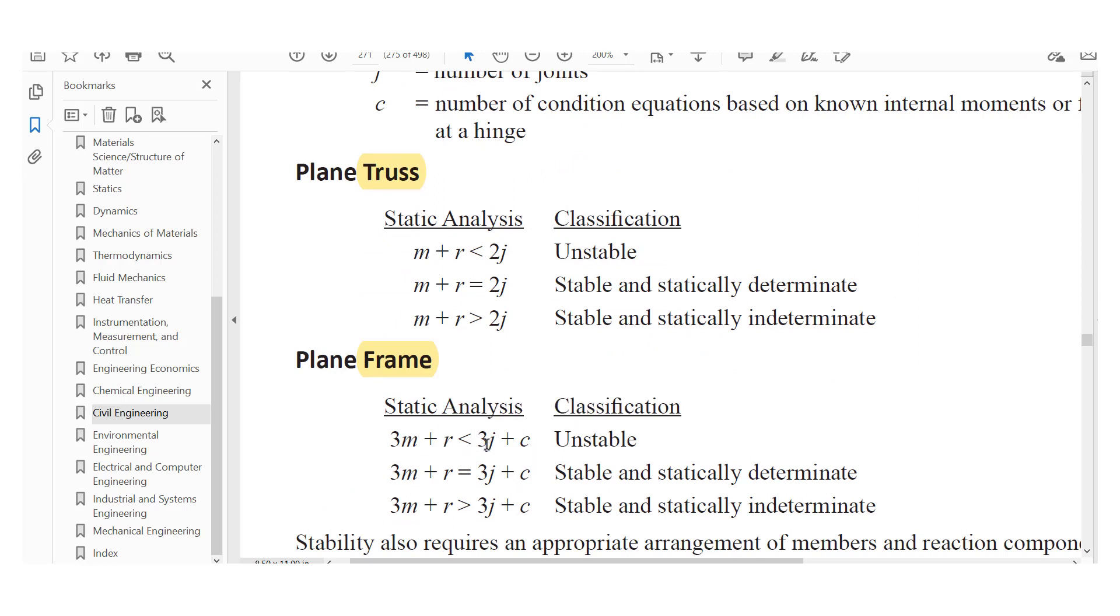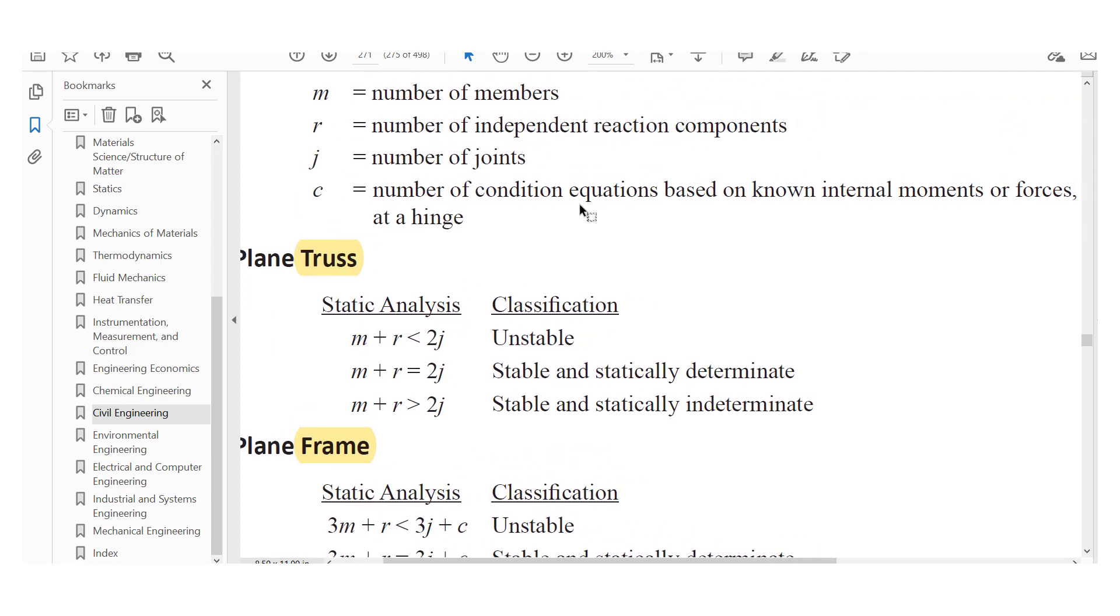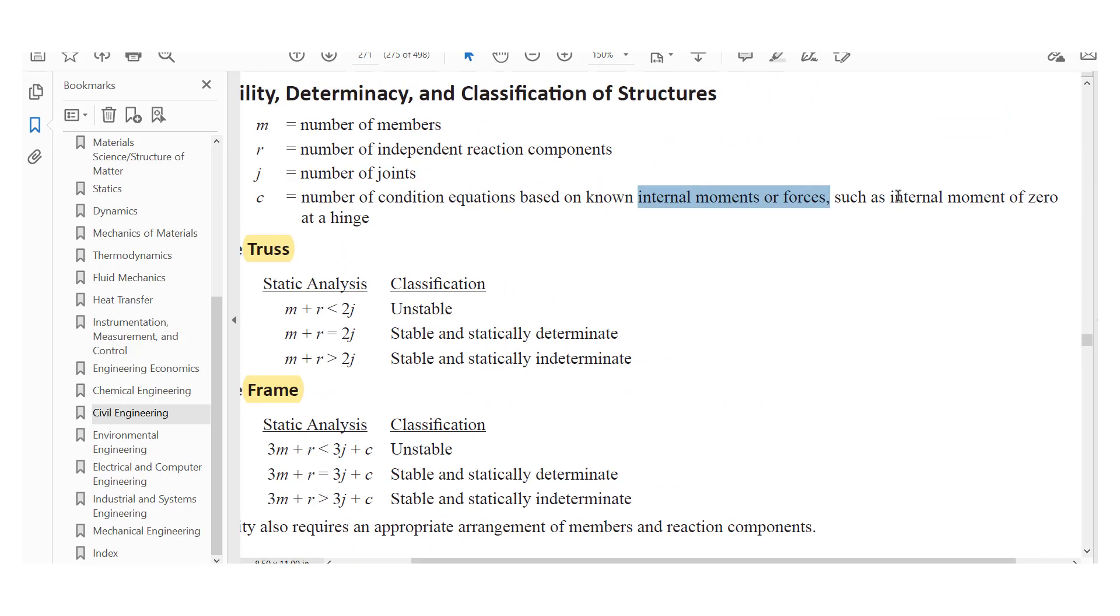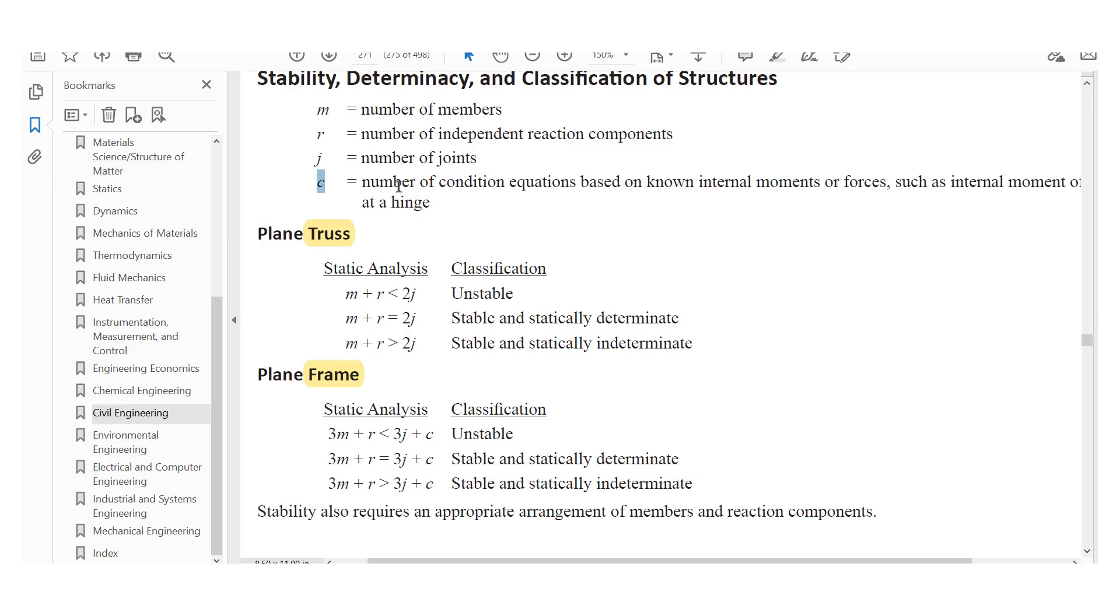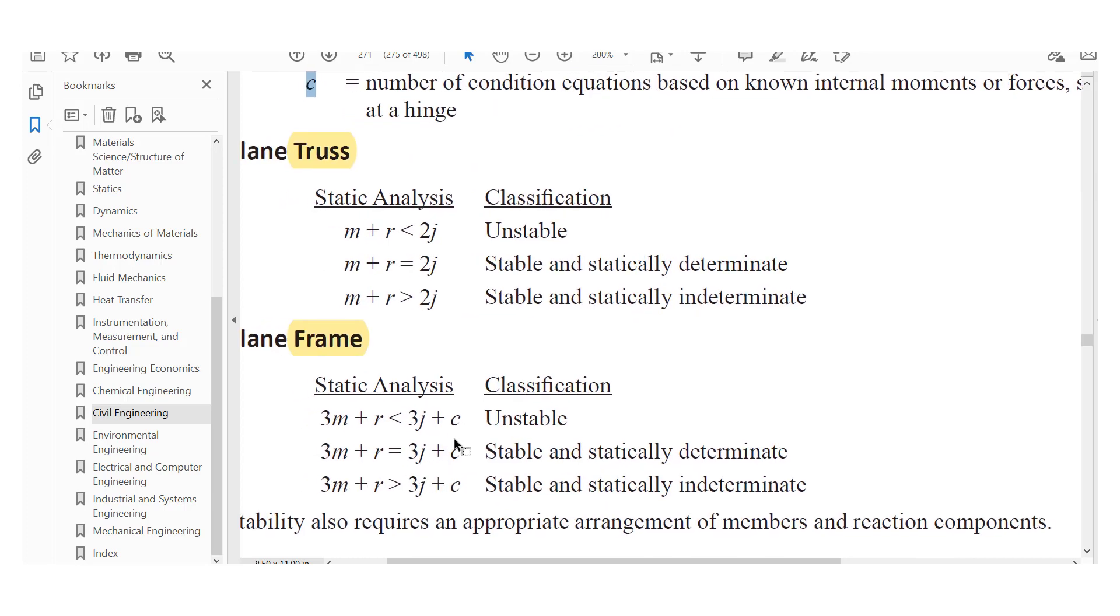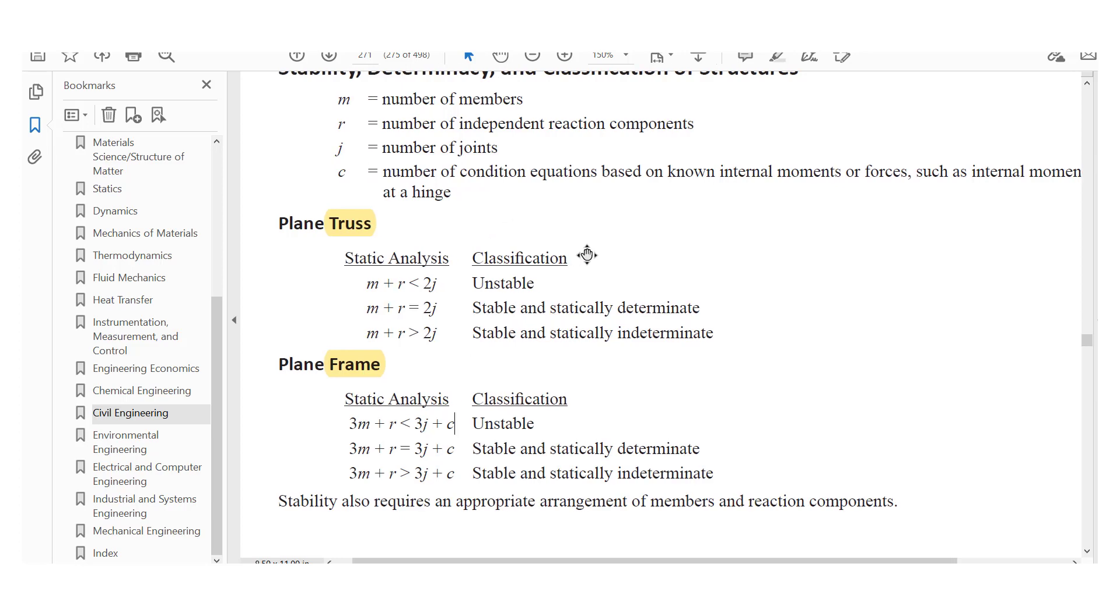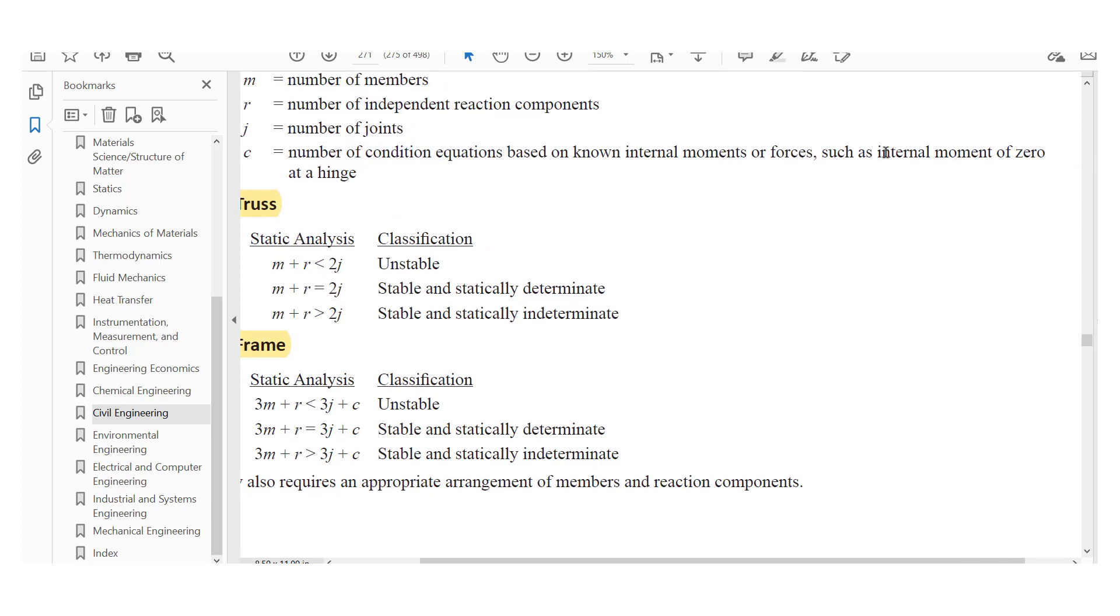J is the number of joints and C is the number of condition equations based on the known internal moments or forces. For example, the internal moment of zero at a hinge. So we know C is just the number of hinges. So for C, just plug in the number of hinges you have for the frame. Just find the number of condition equations for the hinges as denoted here.